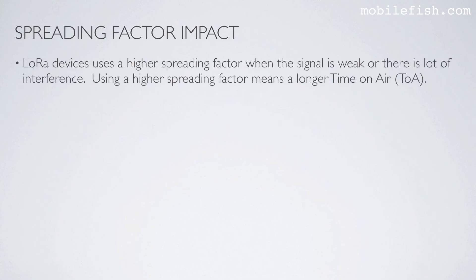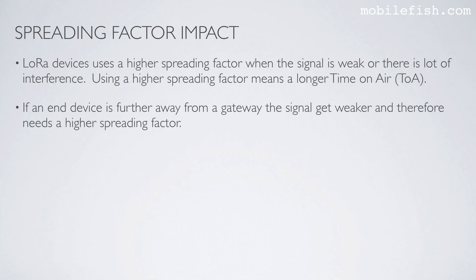LoRa devices use a higher spreading factor when the signal is weak or there is a lot of interference. Using a higher spreading factor means a longer time on air. If an end device is further away from a gateway, the signal gets weaker and therefore needs a higher spreading factor.